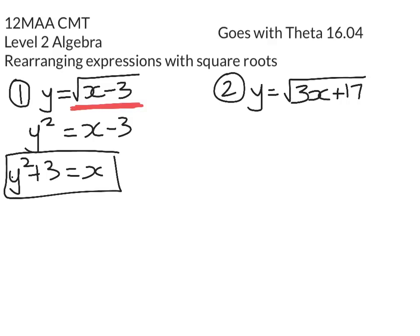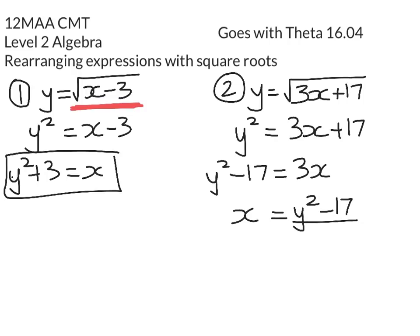The next one works in a pretty similar way. We're going to square both sides. We get y squared equals 3x plus 17. Our goal is to make x the subject. So y squared minus 17 equals 3x. And now we're going to divide both sides through by 3. So we have x equals y squared minus 17 over 3.